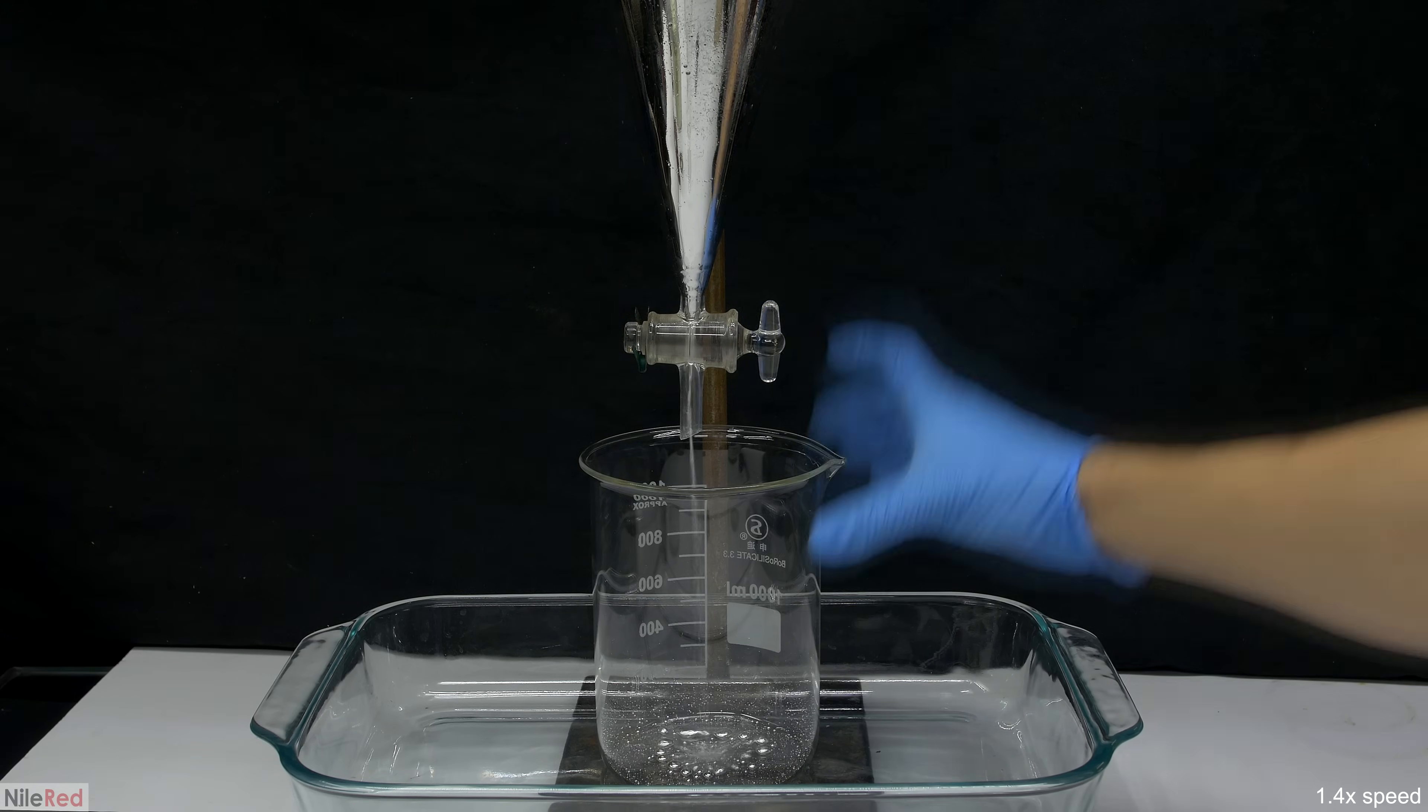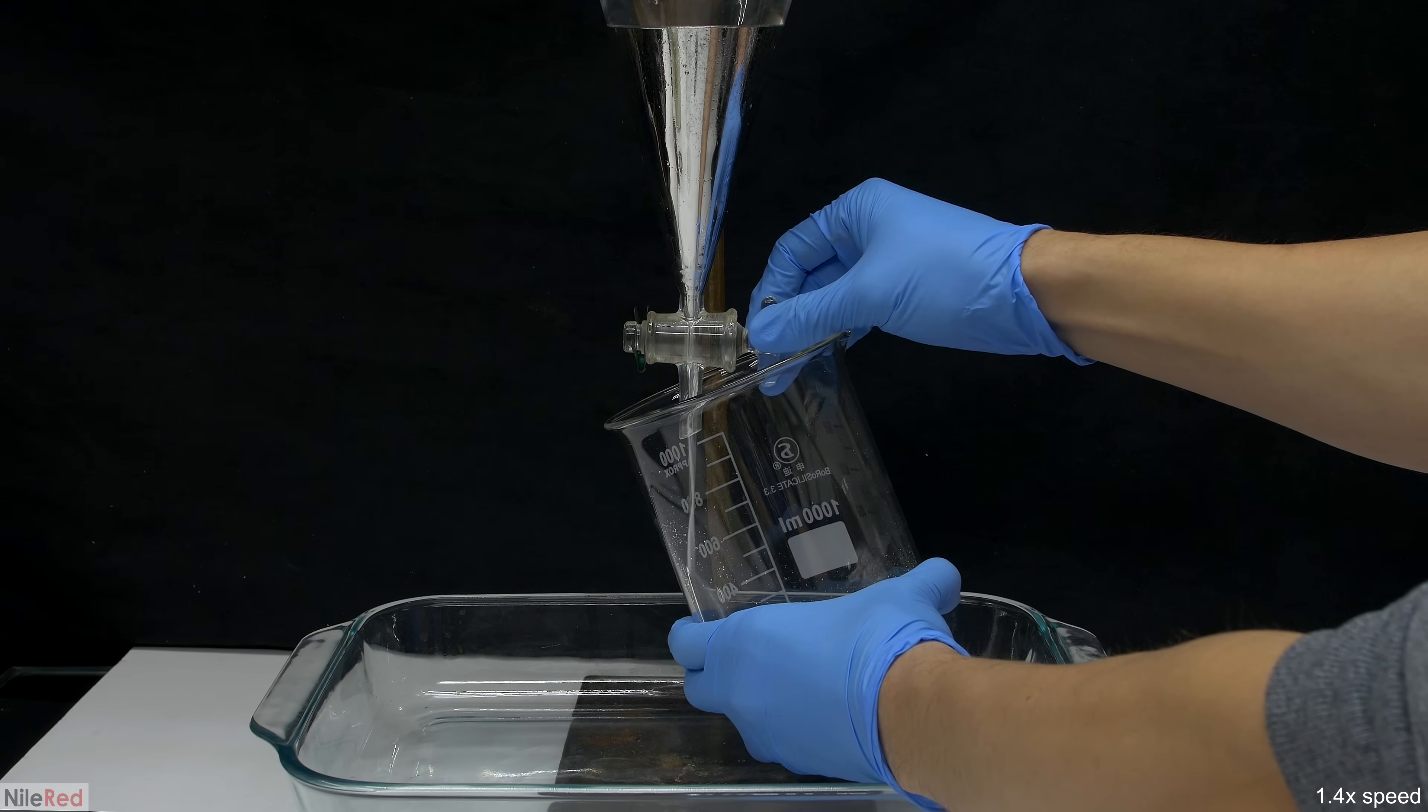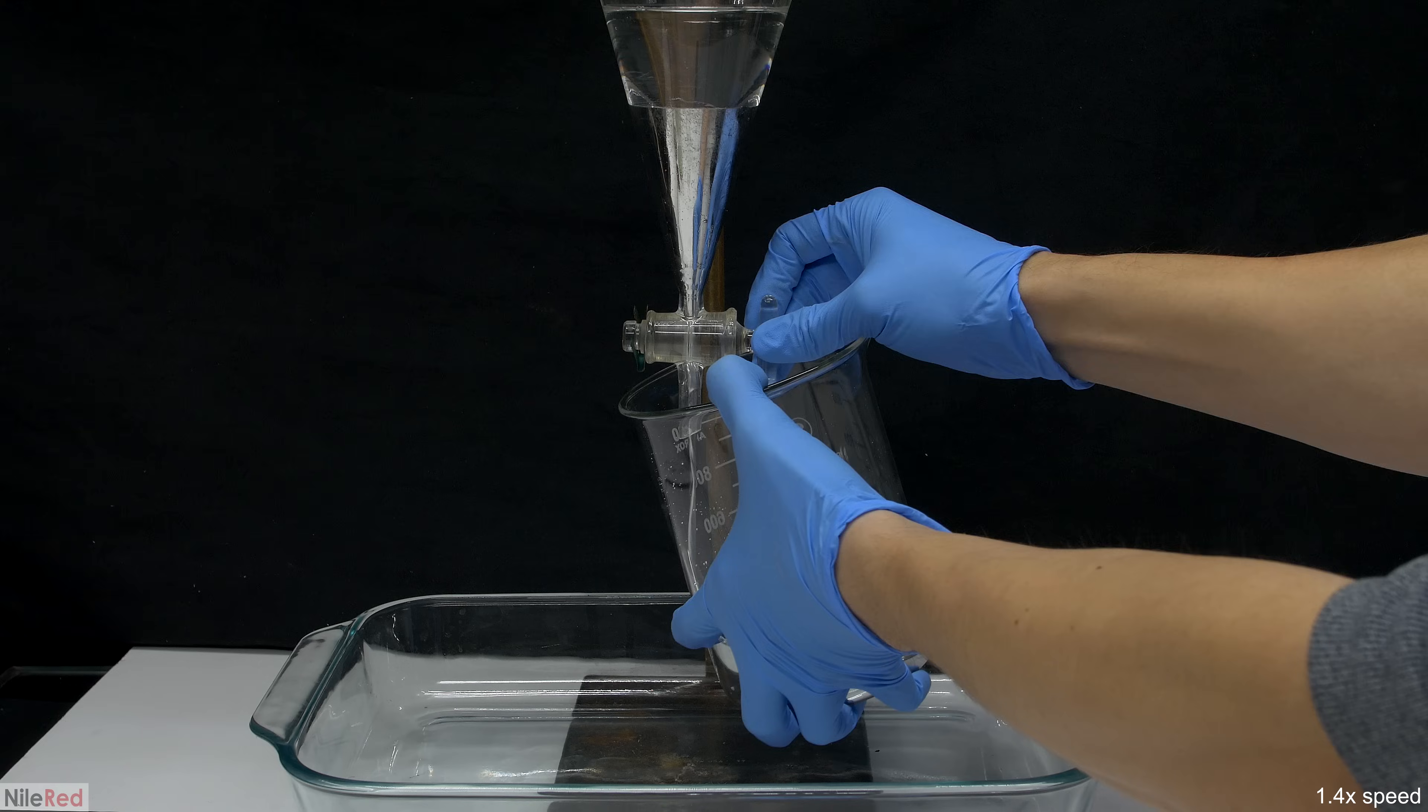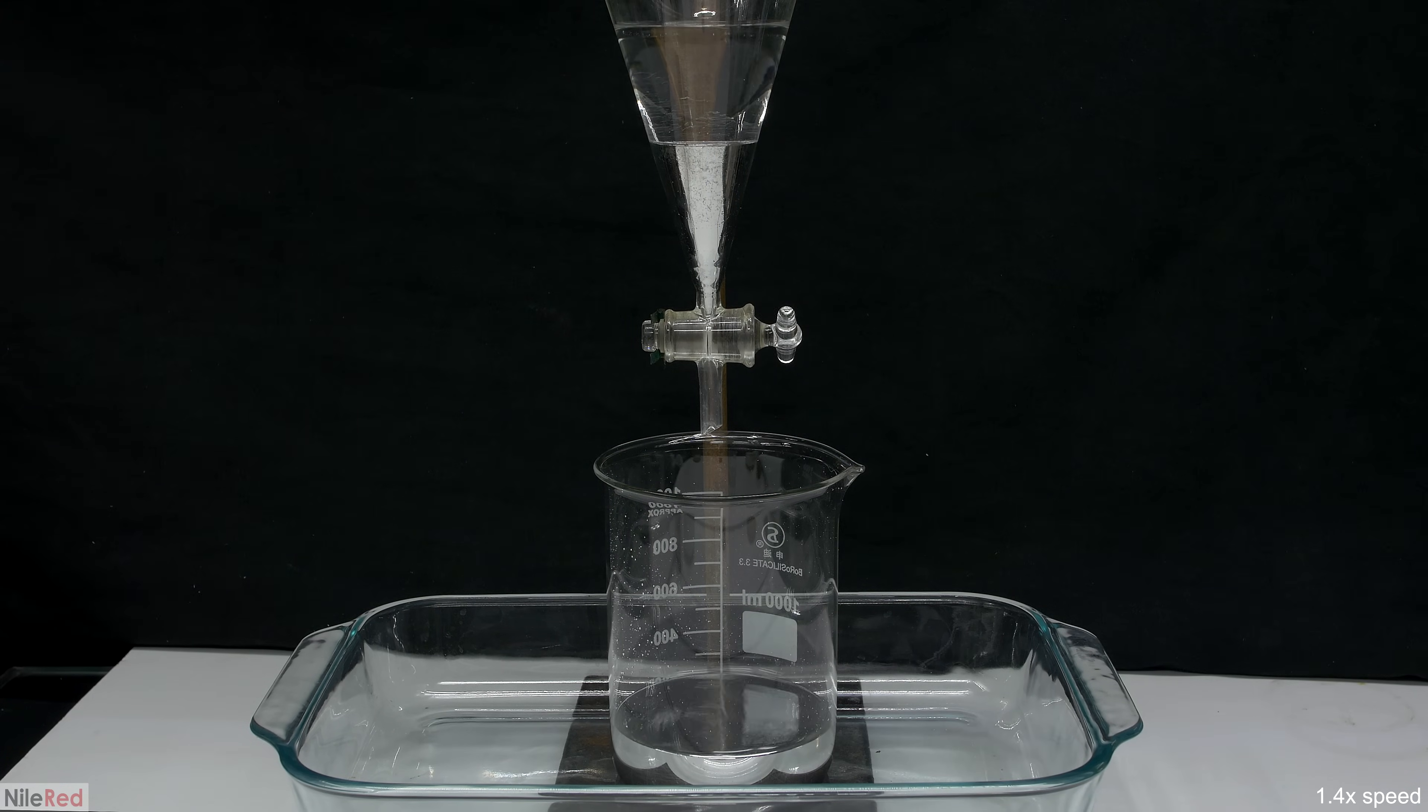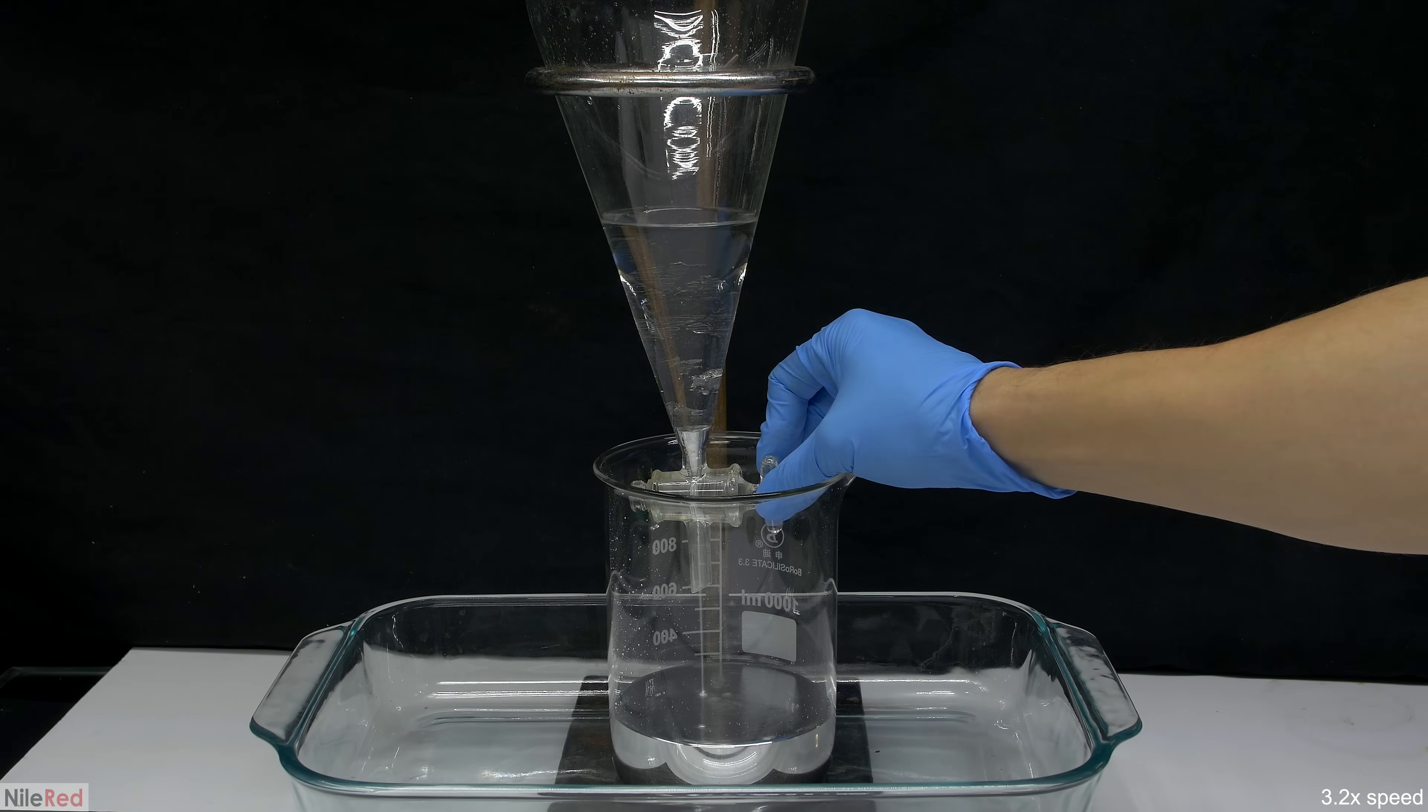After sitting in the separatory funnel for 30 seconds, almost all of the water should have separated so I start to drain the mercury. To prevent mercury from splashing, I had to lift the beaker a little, and unfortunately this obstructs your view a bit. So just for you guys, I stopped draining the mercury and I reposition the sep funnel. This is probably the way that I should have started things off, but anyway now that it's deeper in the beaker the splashing is much less.